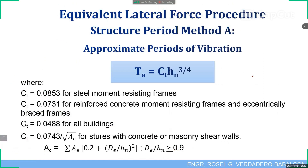For periods of vibration, there are two methods. Method A is the approximate period of vibration: TA = CT × HN^(3/4), where CT equals 0.0853 for steel moment-resisting frames, 0.0731 for reinforced concrete moment-resisting frames and eccentrically braced frames, 0.0488 for all other buildings, or 0.0743 / √AC for structures with concrete or masonry shear walls. HN is the height of the structure above the ground.